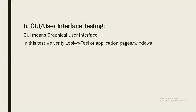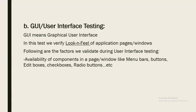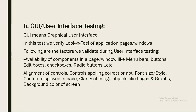We verify the look and feel of application pages or windows. Test factors include: availability of components in a page or window like menu bar, buttons, edit boxes, check boxes, radio buttons, etc.; alignment of controls; spelling of controls; font size; font style; content displayed in a page; clarity of image objects like logos, graphs; background color; and color of screen. These are the user interface test factors.